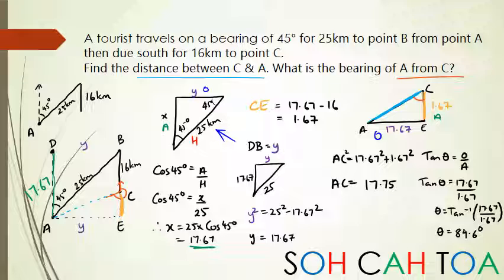Which means for the bearing, I've actually got to add 180 to it. So I actually get a bearing of 264.6 degrees. Now I hope you can see why I'm adding 180, because if you look at the original diagram, this angle here is 84.6, and this extra bit here, that's that 180 that I needed to add. So that's how I get 264.6 degrees.